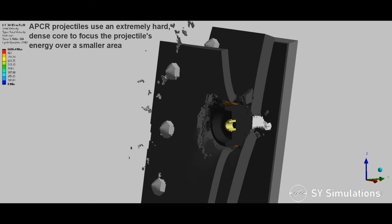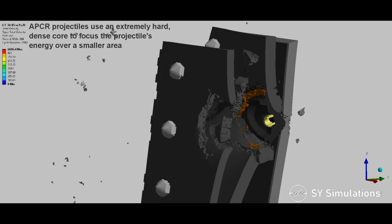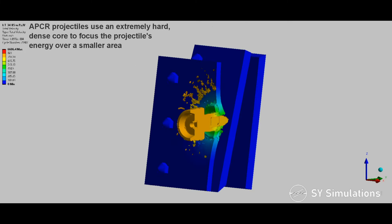APCR projectiles use an extremely hard, dense core to focus the projectile's energy over a smaller area.